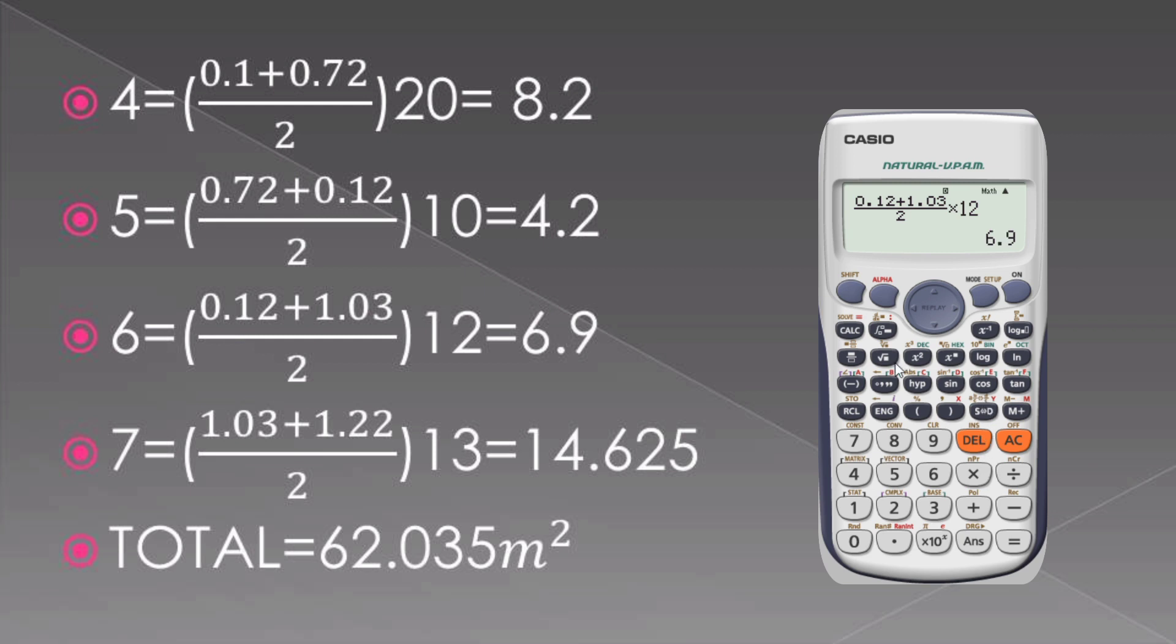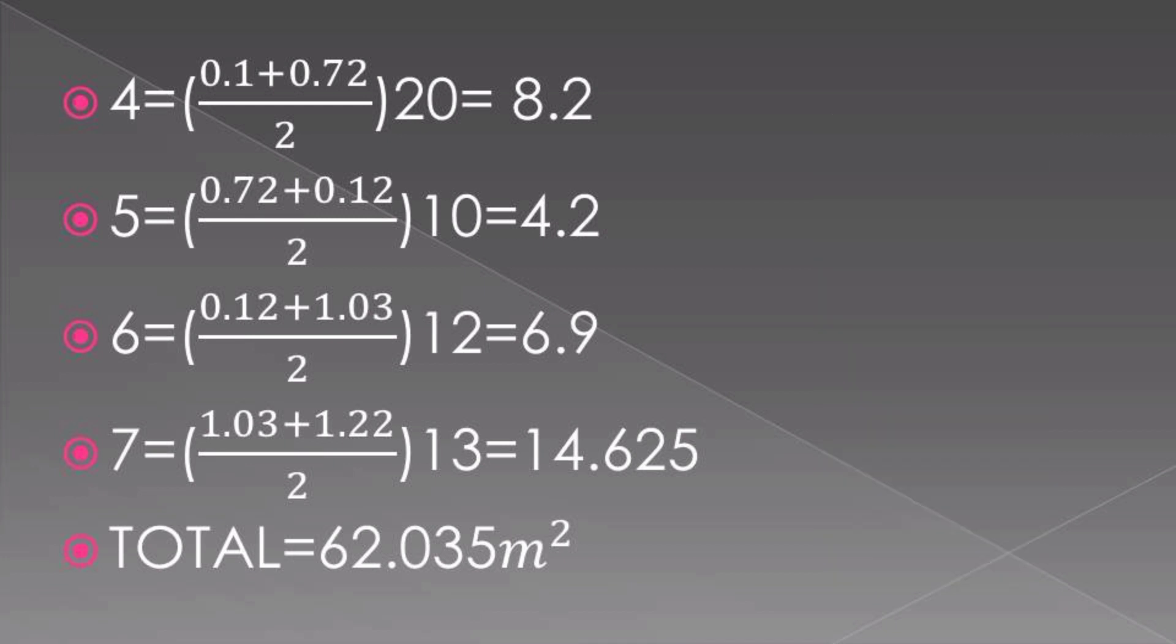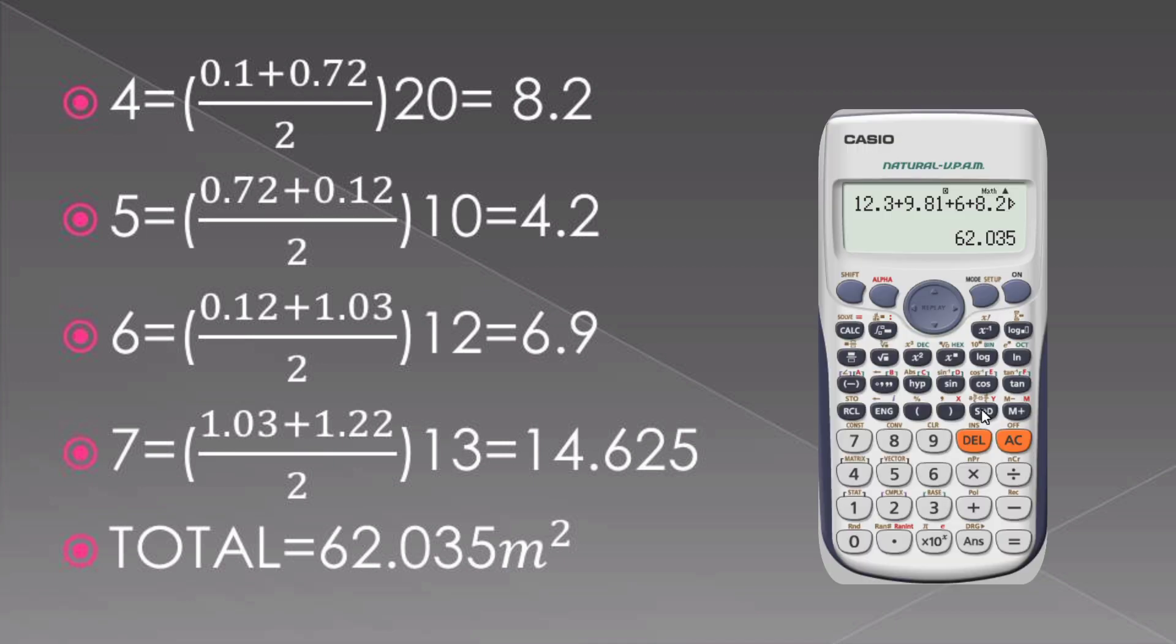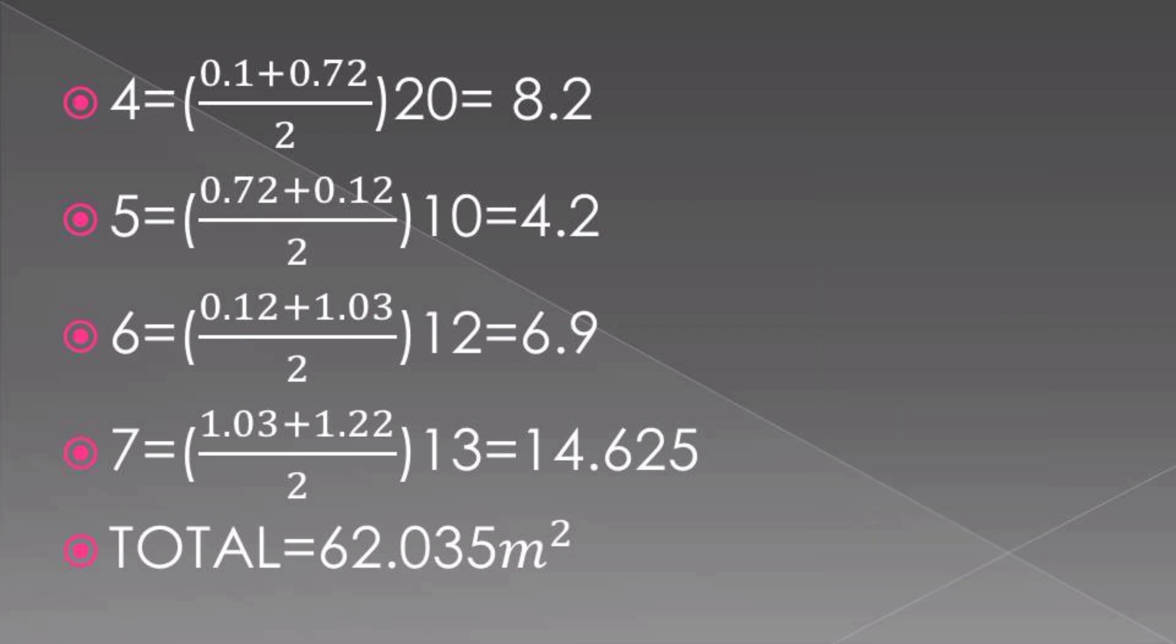On our last area, that is 1.03 plus 1.22 divided by 2 multiplied by 13, we get 14.625. We go ahead and we add all our areas, the seven total areas, and our total answer becomes 62.035 meters square. That is the simplest possible way on which you can tackle that question.